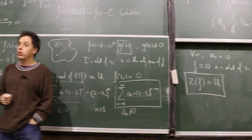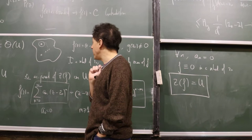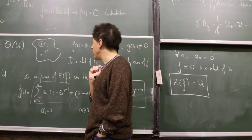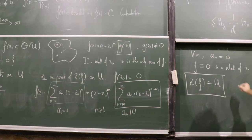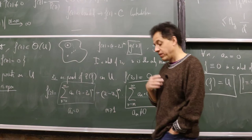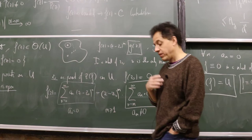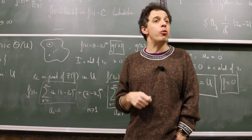So we have proved: if a holomorphic function on a connected open set U has a zero with an accumulation point in U, then the function is identically zero. Equivalently, if a holomorphic function is not identically zero, then its set of zeros must be discrete — it has no accumulation points inside U.